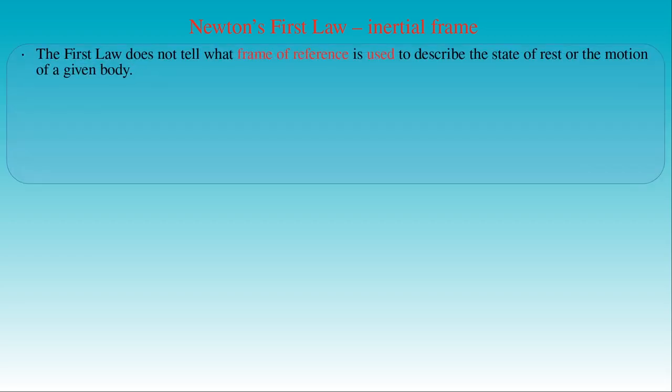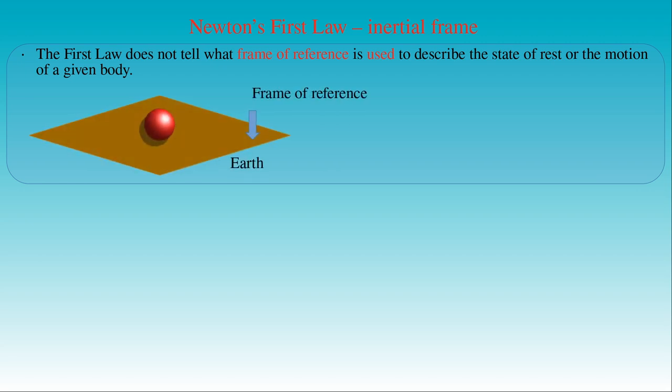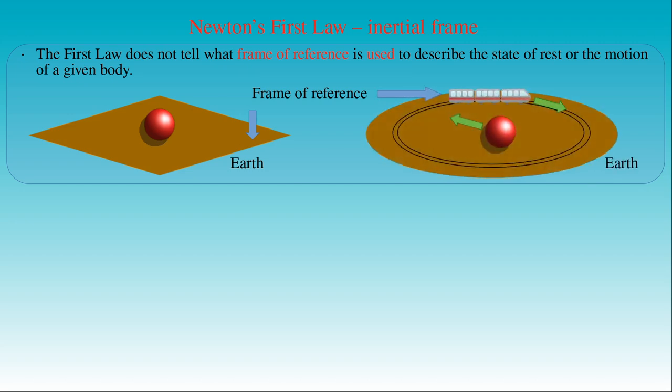Newton's first law of motion describes motion with respect to a frame of reference. However, the first law does not tell us what frame of reference is used to describe the state of rest or the motion of a given body. This is an important question, since the description of motion can be completely different with respect to different frames of reference. For example, a body can be in the state of rest with respect to the earth, but it has an accelerating motion with respect to a train traveling on a round track.